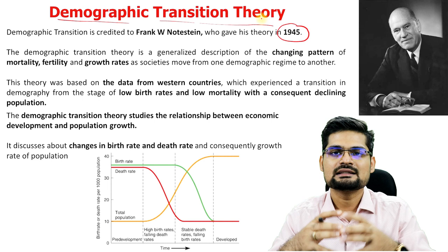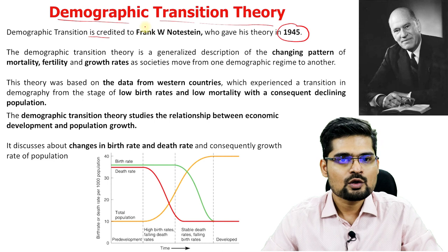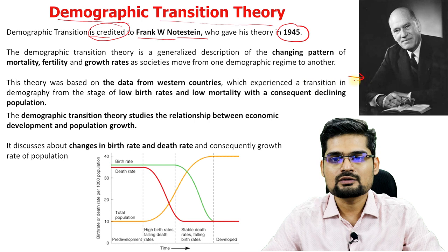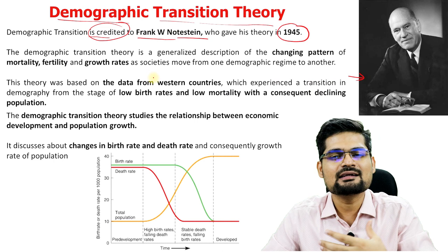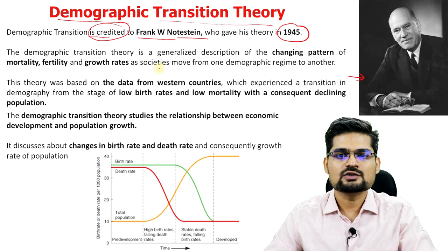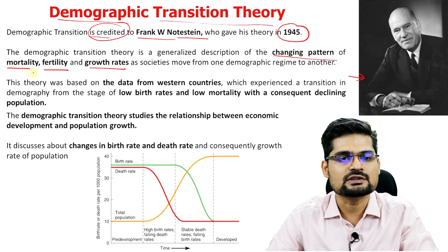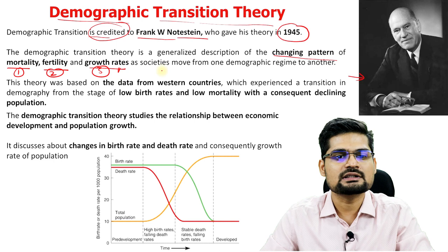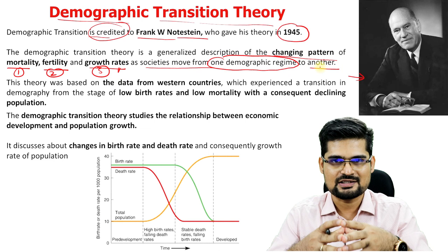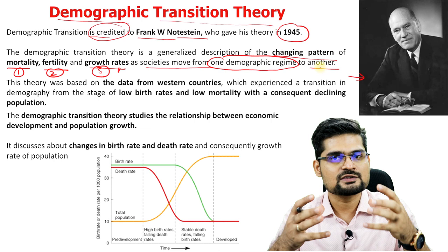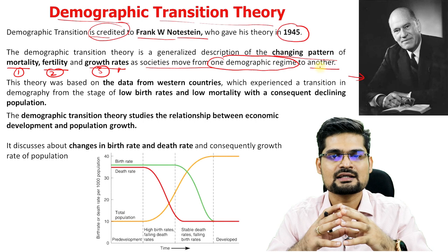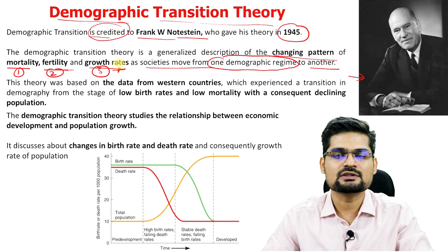The Demographic Transition Theory is credited to Frank Notestein. He talked about this theory as a generalization — a general application across the world — about the changing pattern of mortality, fertility, and growth rate. These three keywords — mortality, fertility, and growth rate — are key as societies move from one demographic regime to another. A demographic regime refers to the structure of society in terms of its demography and population parameters in a given phase of economic development.